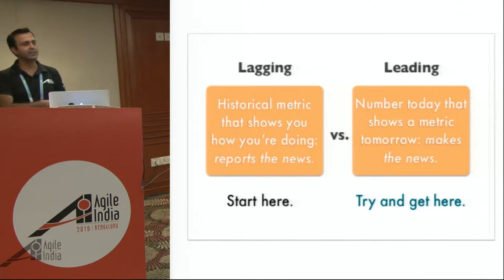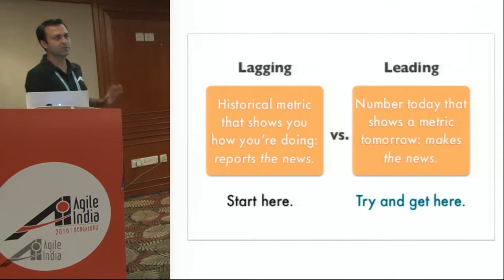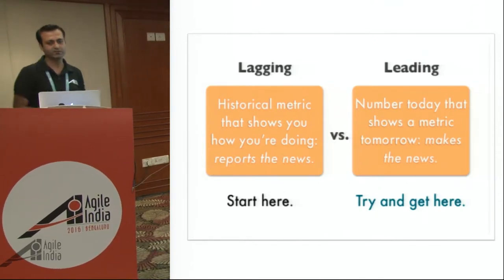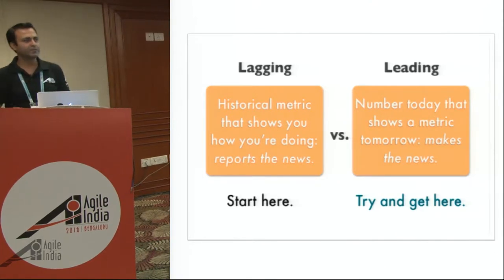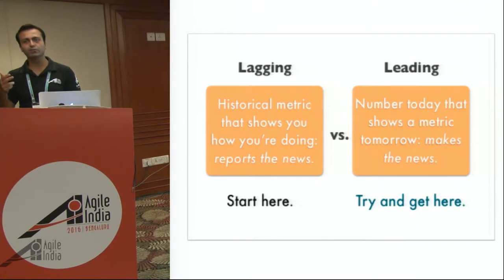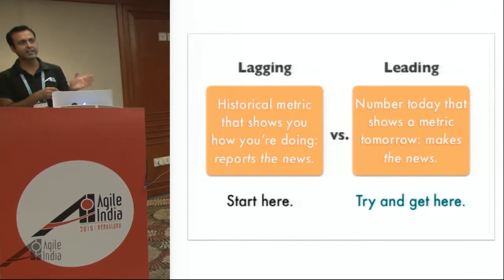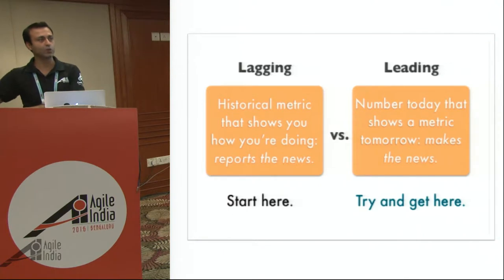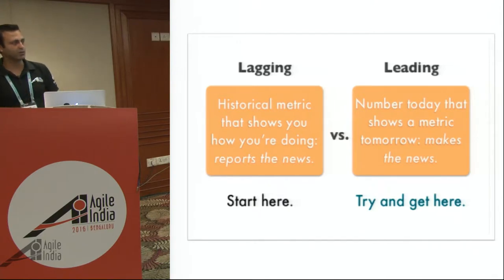The other thing to look at is lagging indicators versus leading indicators. Lagging indicators are done and dusted — for example, your sales churn rate. Once customers are gone and you're tracking your churn rate, there's really nothing you can do about whatever is gone. But leading indicators will show you what's coming: based on this, you are able to predict the next set of things. For example, a sales funnel — if you keep track on your sales funnel, it will tell you how much is going to convert. So you have to keep a balance between leading and lagging indicators; if you don't know the difference, your interpretation will always be wrong.